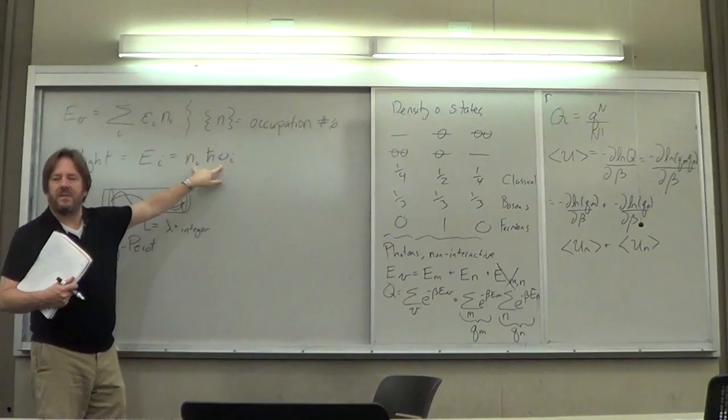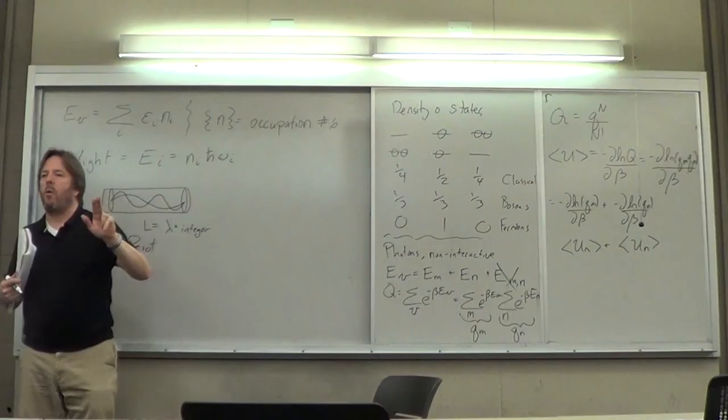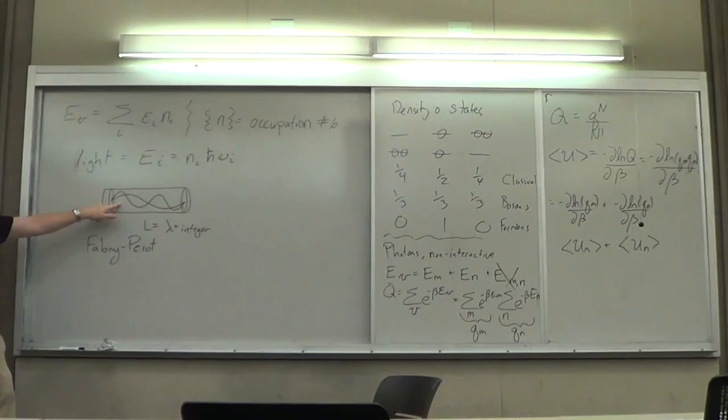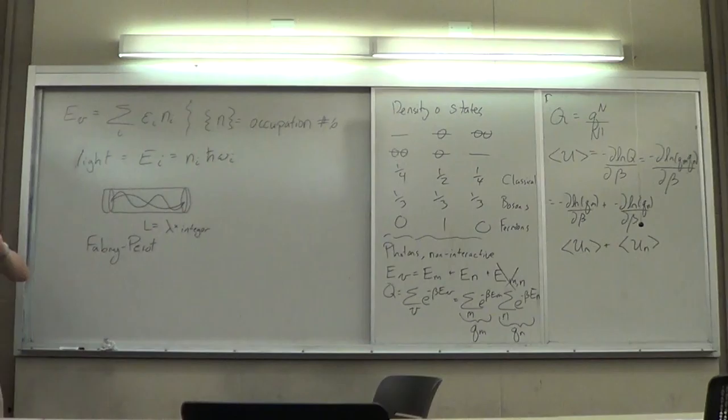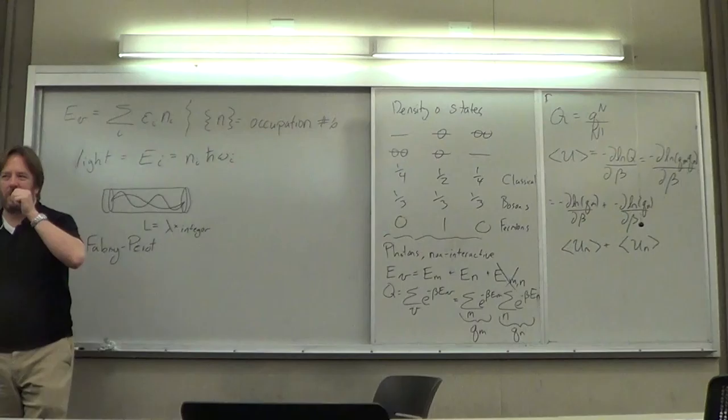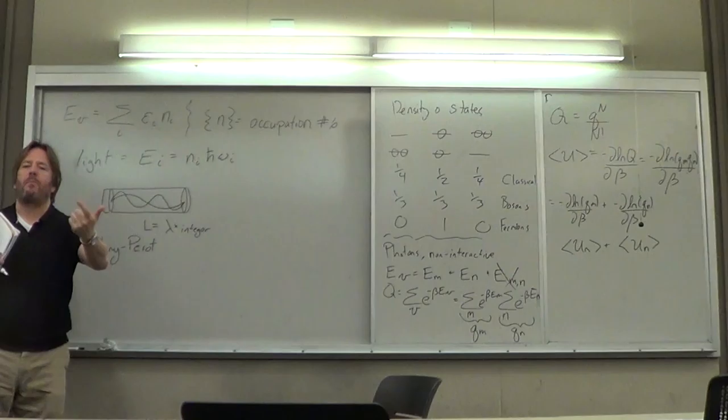This is the hardest thing to understand about light: you have to hold two things in your head simultaneously. First, only certain wavelengths of light are allowed inside a laser cavity. Second, there can be an arbitrary number of photons in any particular mode. There are certain sets of modes, and then a certain set of occupation per mode.